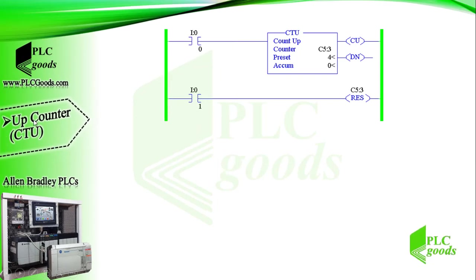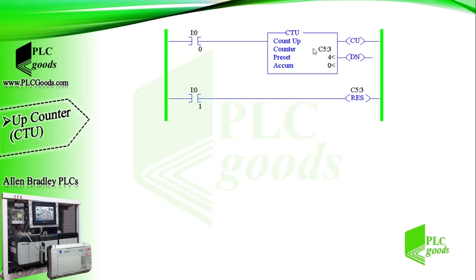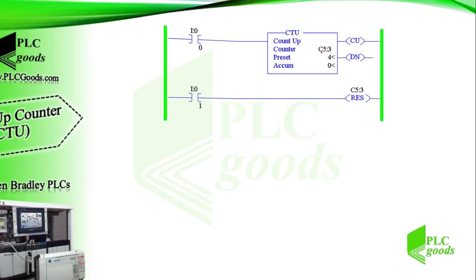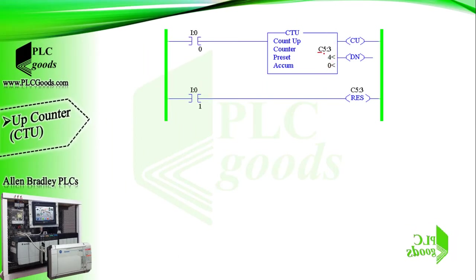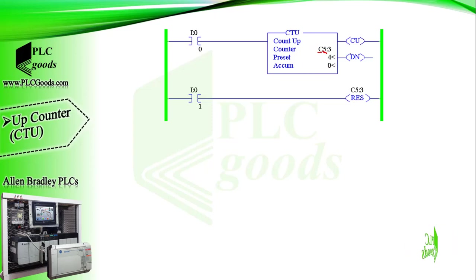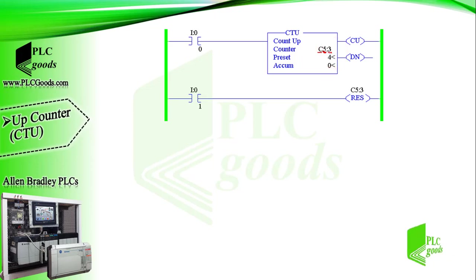Let's start with the up counter. Counters are programmed almost exactly like timers discussed in the previous video. The counter is numbered like the timer except it begins with a C instead of T. C identifies the instruction as a counter file. The next number 5 is the default file number. Any unused file number from 10 to 255 can be assigned. A colon separates the file number from the counter number, which is number 3. We can have up to 256 counters in each file number.